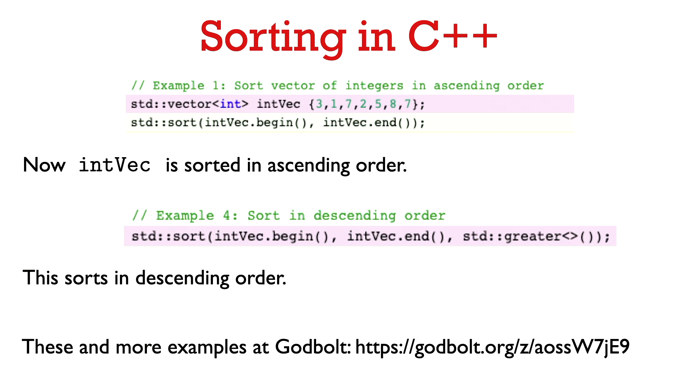So if we have a vector of integers here called intVec, I can sort the entire vector by passing standard sort an iterator to the beginning and an iterator to the end of the string. In this case, I don't need to pass a comparison function. If I want to sort it in ascending order, just the default comparison function will do that.